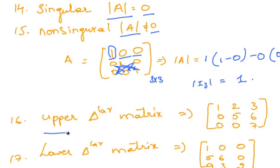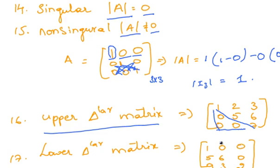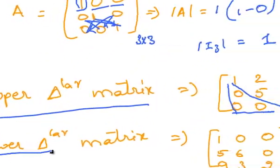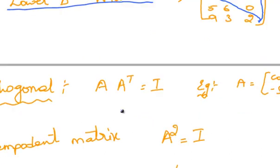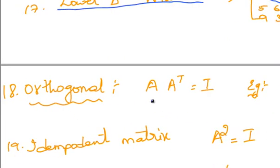Upper triangular matrix — a matrix in which the elements below the principal diagonal are 0 is known as an upper triangular matrix. Orthogonal matrix — if A times A transpose is equal to I, then that matrix is said to be an orthogonal matrix.